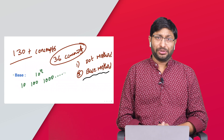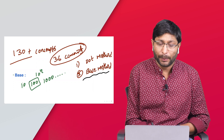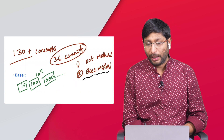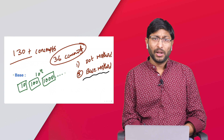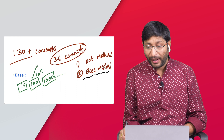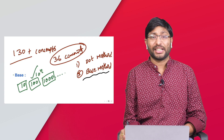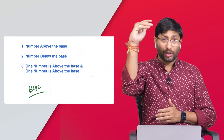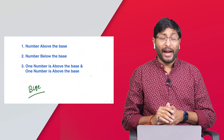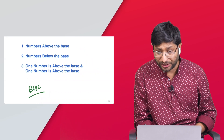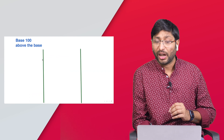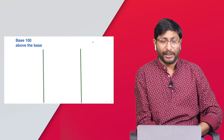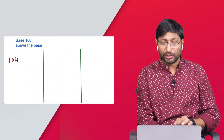While doing multiplications, you consider any one base number depending on the problem. By the end of this video you will understand how to choose it. In base method there are mainly three types: numbers above the base, numbers below the base, and one number above and one below the base. In this video I'm going to teach you the concept where both numbers are above the base — specifically, base 100 and above.